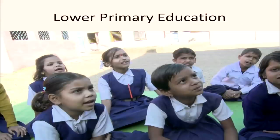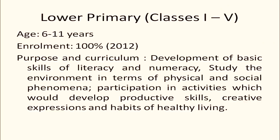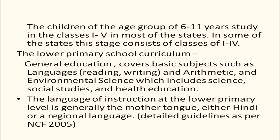The next step is lower primary education, that is classes 1 to 5. The age group is 6 to 11 years and enrollment at present is 100 percent. The purpose is development of basic skills of literacy and numeracy, studying the environment in terms of physical and social phenomena, and participation in activities which develop productive skills, creative expression, and habits of healthy living. In most states, classes 1 to 5 cover this level, but in some states primary level is only classes 1 to 4, with 5th taken up to upper primary.